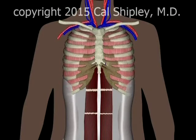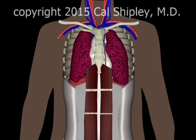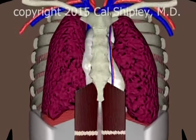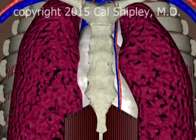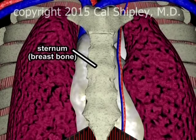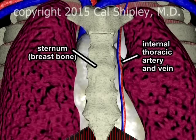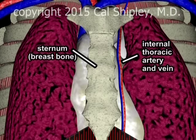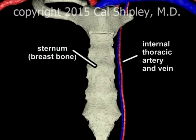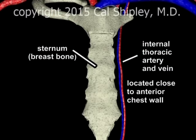The other key vascular structures involved in the DIEP breast reconstruction procedure are the internal thoracic artery and vein. The internal thoracic vessels are located in the thorax or chest cavity and lie just to the side of the sternum. Depicted here are the left internal thoracic vein and artery. These vessels also lie very close to the anterior chest wall, and this location is critical to their usefulness in the DIEP procedure.